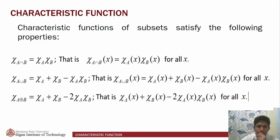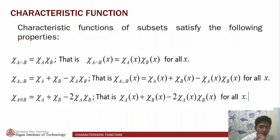Good afternoon, everyone. My name is Anton Jan Legaspi. For the continuation of the report, the characteristic functions of subsets satisfy the following properties. Property 1: the characteristic function of A intersection B is equal to the product of the characteristic function of A and the characteristic function of B. For property 2, the characteristic function of A union B is equal to the sum of the characteristic function of A and characteristic function of B minus their product.